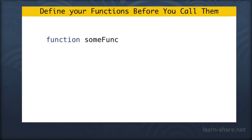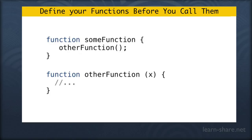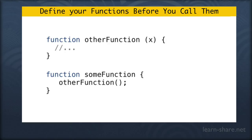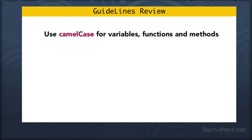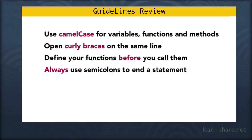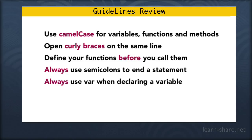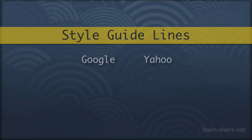As we've already seen, functions should be defined before their calls. If you have code that is calling a function later in that file, rearrange them to make it easier to read and understand. So let's review these guidelines. Use camelCase for variables, functions, and methods. Open curly braces on the same line. Define your functions before you call them. Always use semicolons to end a statement. Always use var when declaring a variable. These guidelines are enough to get started, but if you want to go deeper, search for JavaScript style guidelines — you'll find good documents from places like Google or Yahoo, or search for style guidelines for any other language you're interested in.